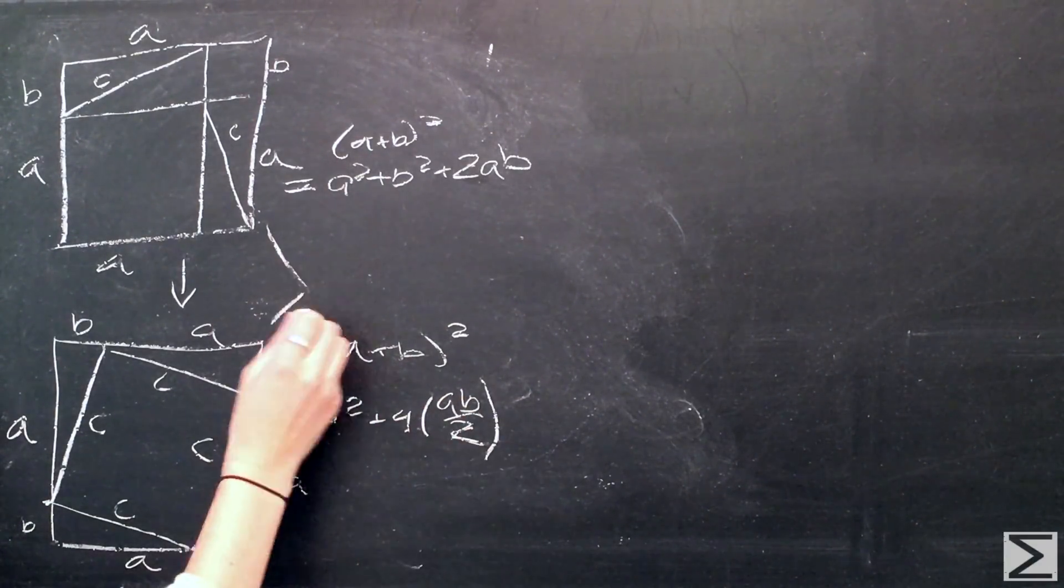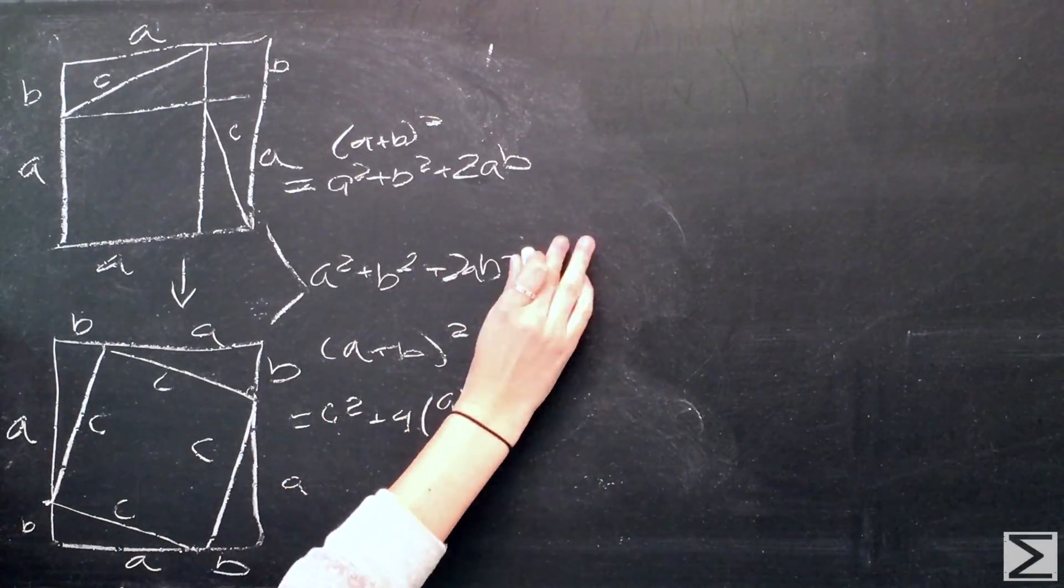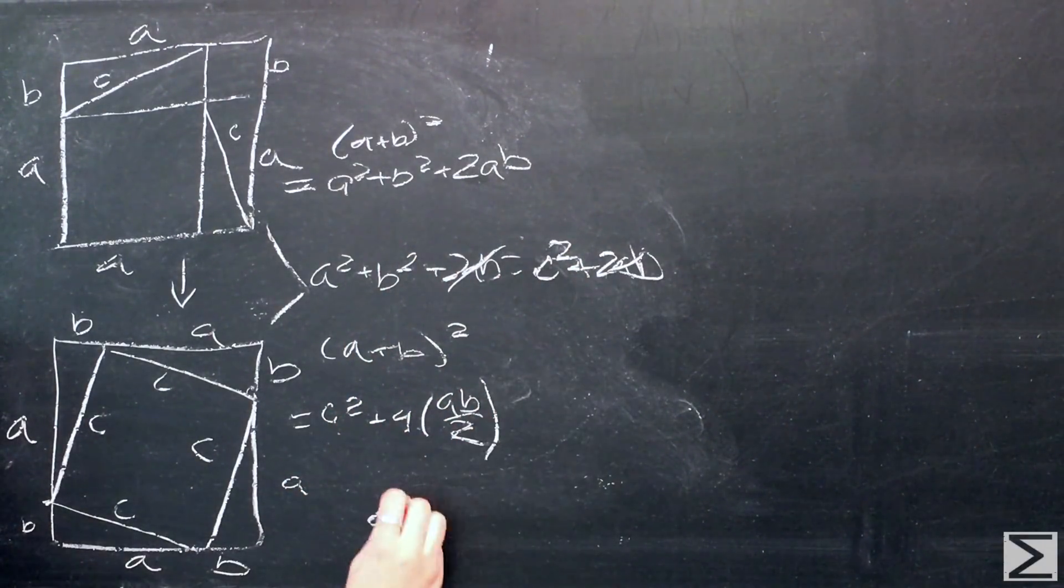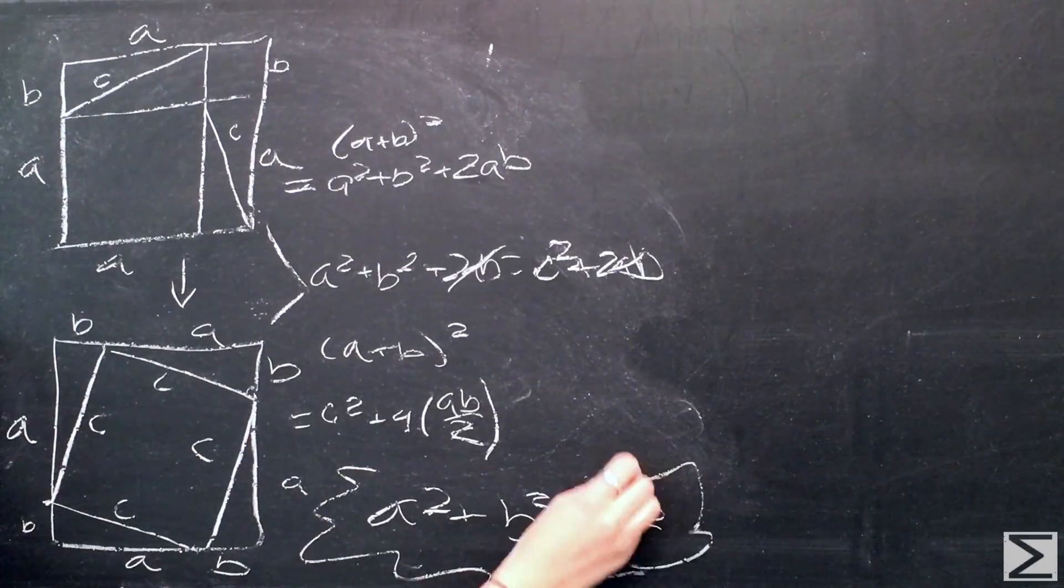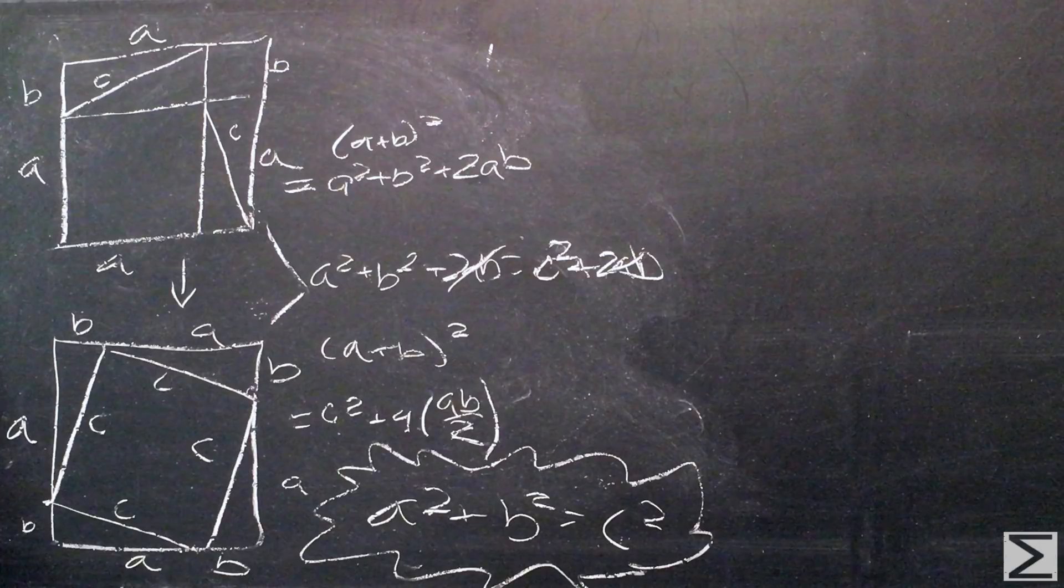Now we can represent the sum of the areas of the two squares and two rectangles in two different ways. One way as the sum of the areas of two squares and two rectangles, and one way as the sum of the areas of a square and four rectangles. When we set these two equations equal and remove the areas of the four triangles, we find that C squared is equal to A squared plus B squared, meaning that the square with side C is equal to the square with side A plus the square with side B.